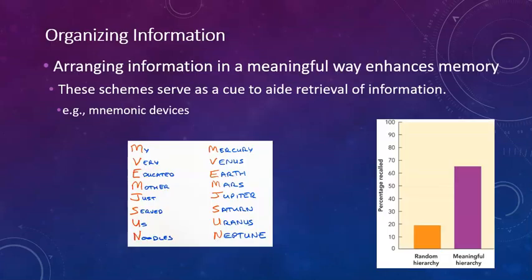Now we can also organize information to help with the encoding as well. And so when we organize information, what we're doing is we're arranging the information into a meaningful way. In other words, we're taking information and we're making sure that we're using semantic processing rather than just structural. So there's a lot of different schemes we can do to help this. And these schemes help to serve as a cue when it's time to retrieve information as well. We oftentimes will call these schemes a mnemonic device. A mnemonic device will help us to recall information later, but also helps us encode information in a meaningful way.